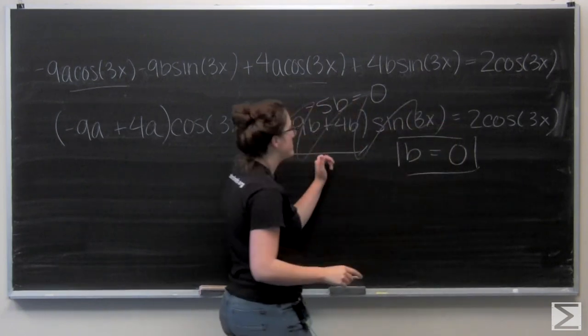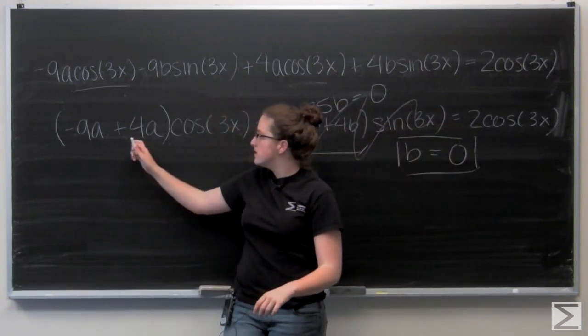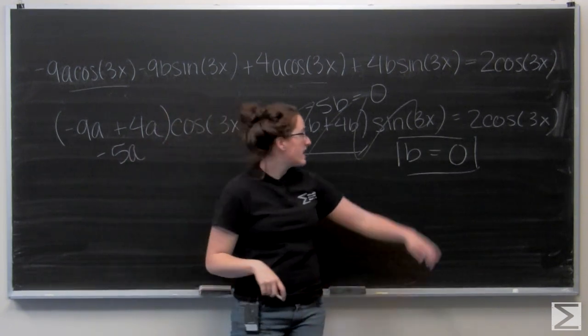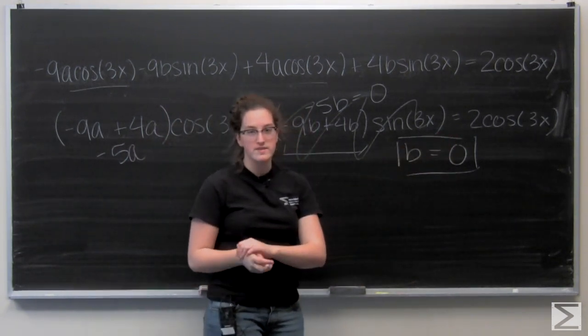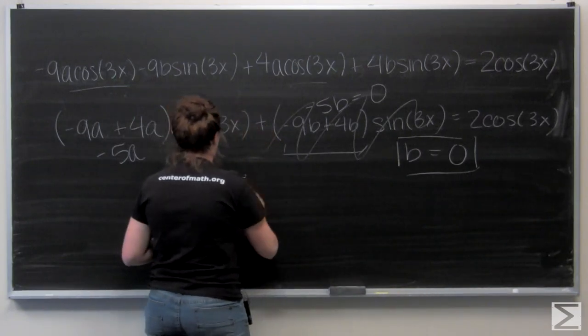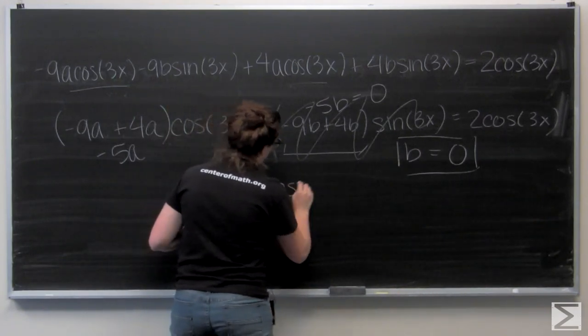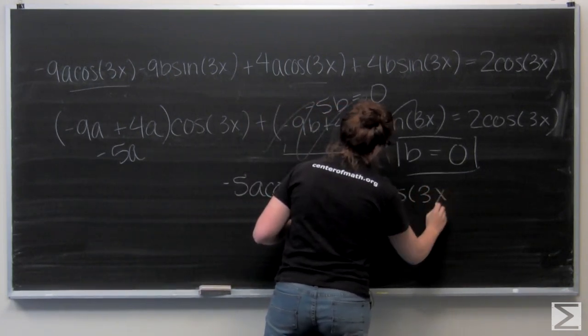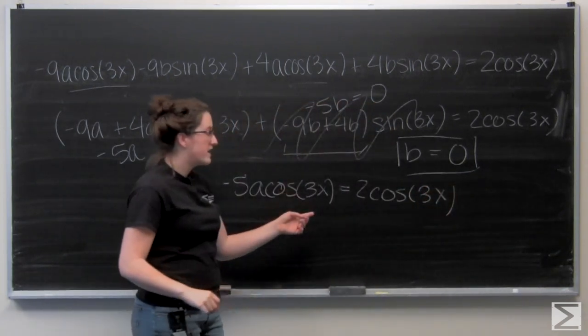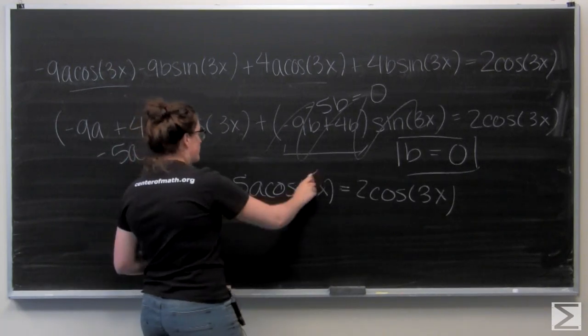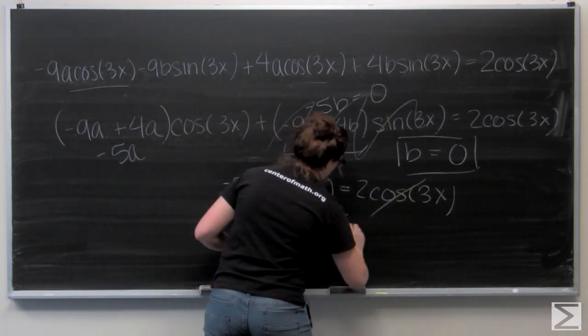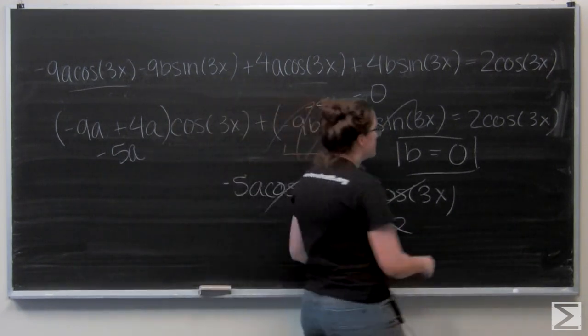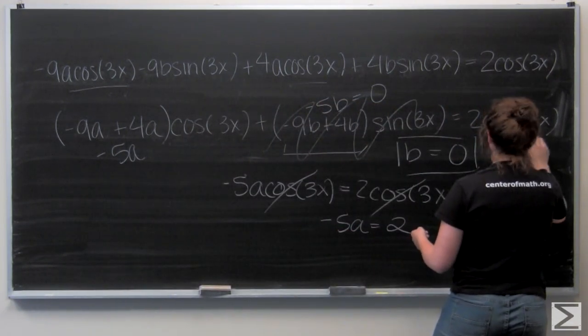So that term drops out and I have this is negative 5a. Negative 5a cosine of 3x equals 2 cosine 3x. I'm going to eliminate that cosine of 3x from both sides of the equation. Negative 5a equals 2, a equals 2 fifths. Excuse me, negative 2 fifths.